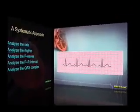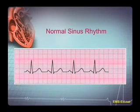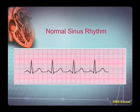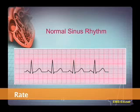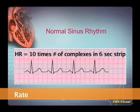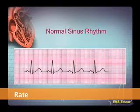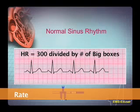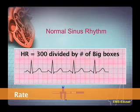So now let's jump in. Before we know what is abnormal, we need to know what is normal. Let's be systematic. First, what is the rate? We could count the number of complexes in a 6-second strip and multiply by 10 to get the heart rate. But this is not a 6-second strip — no problem. Count the number of big boxes between R waves, divide that number into 300, and that is the heart rate.